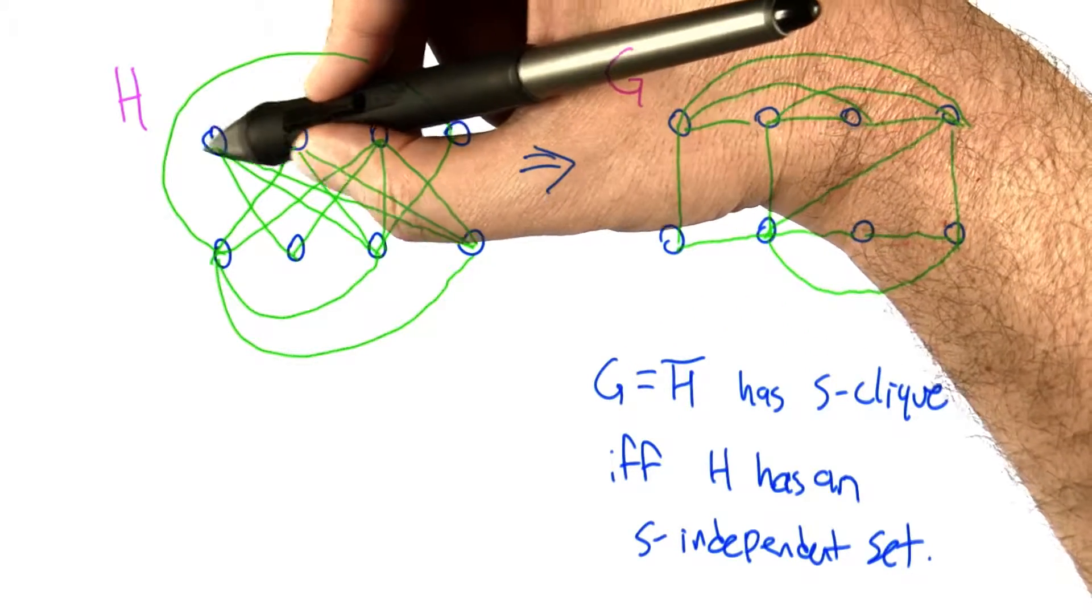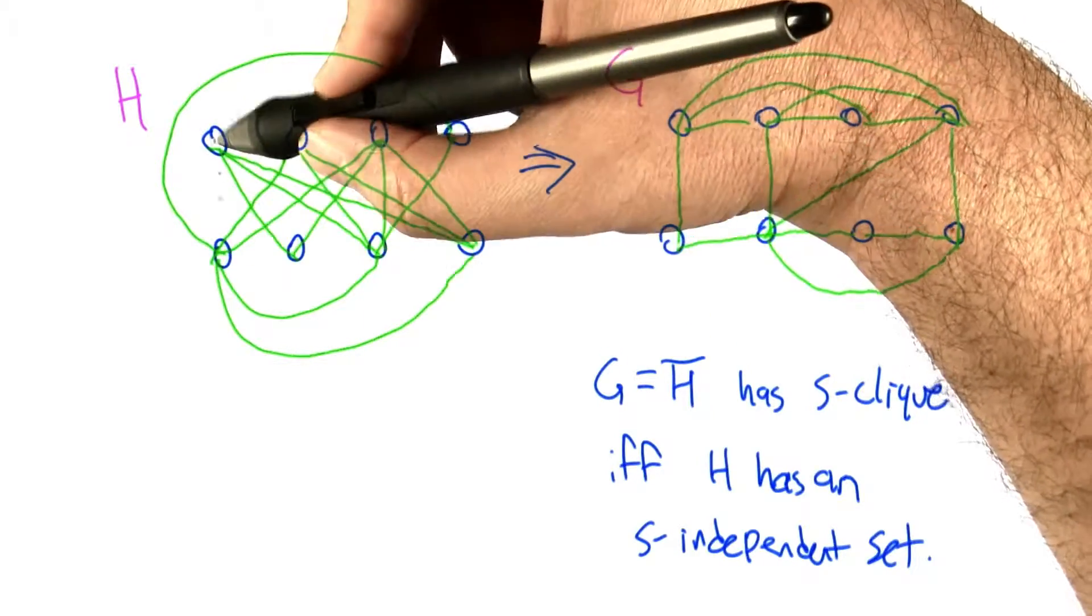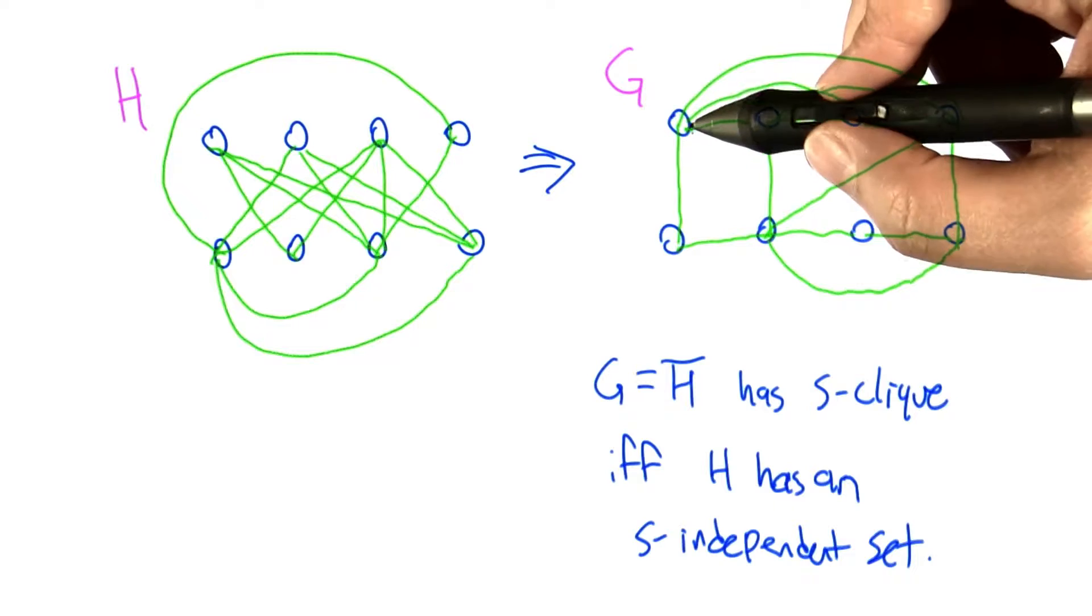For example, this node is not connected to this one or this one. In the complement graph, we connect it to that one and that one.